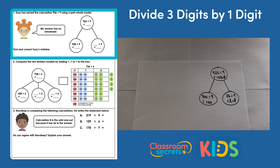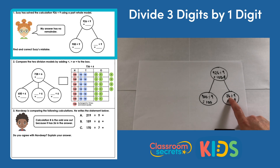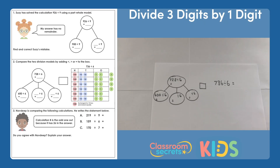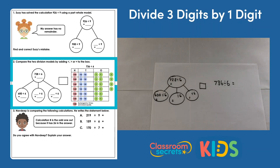We can see that Susie's mistake is that she should have a remainder. Her error could have been that she believed 926 would divide equally by 9 with no remainder. Question two: compare the two division models by adding less than, greater than, or equal to the box.